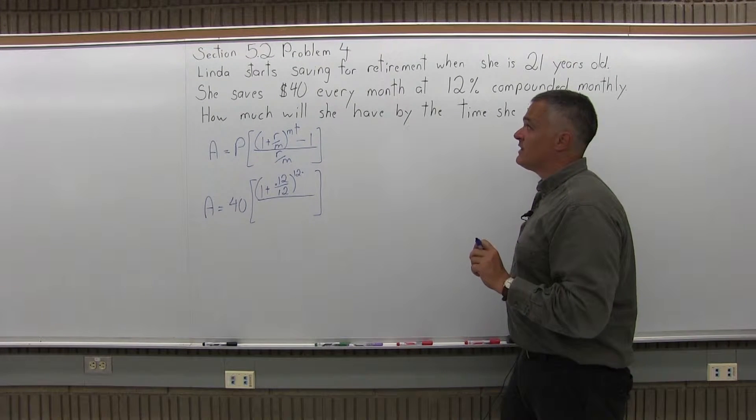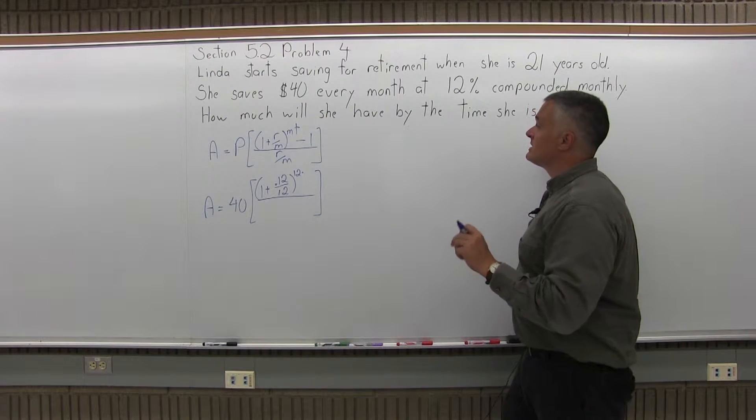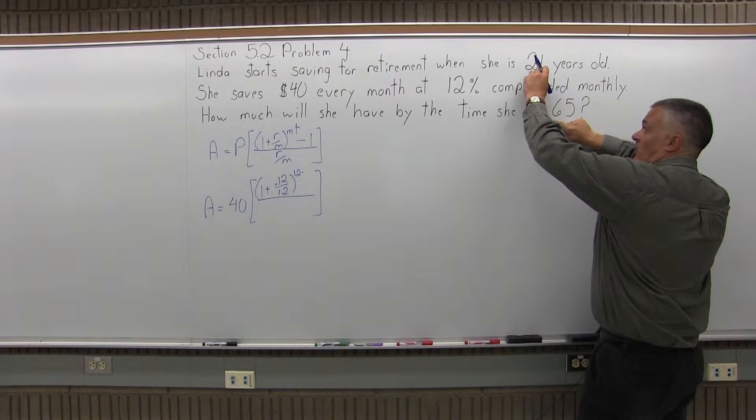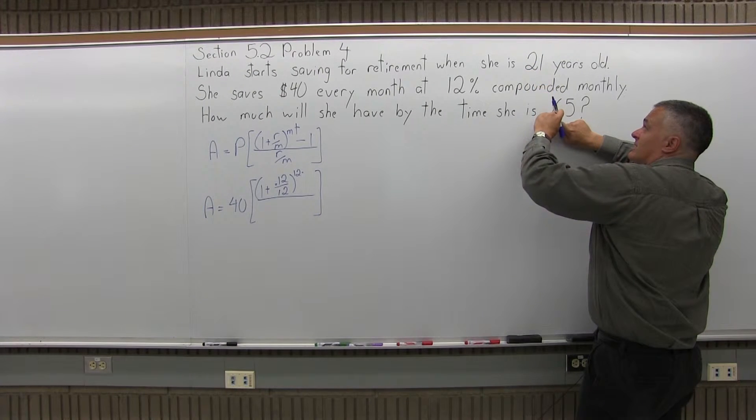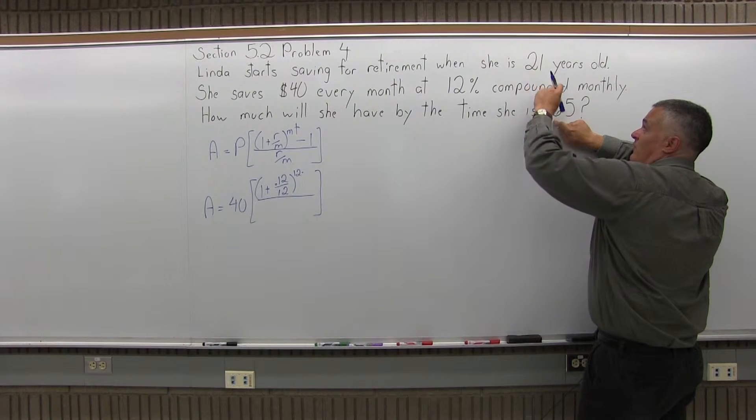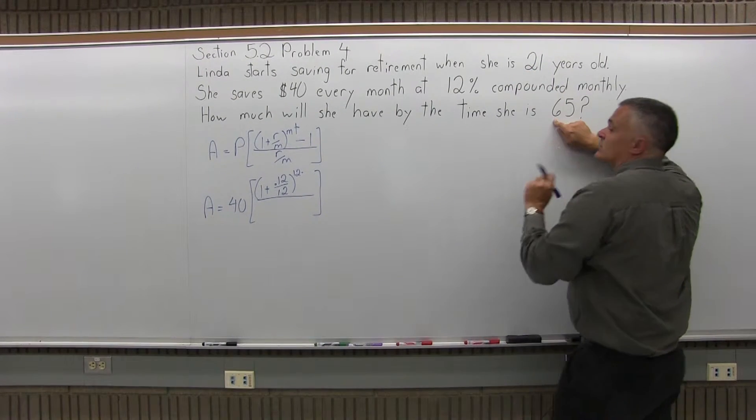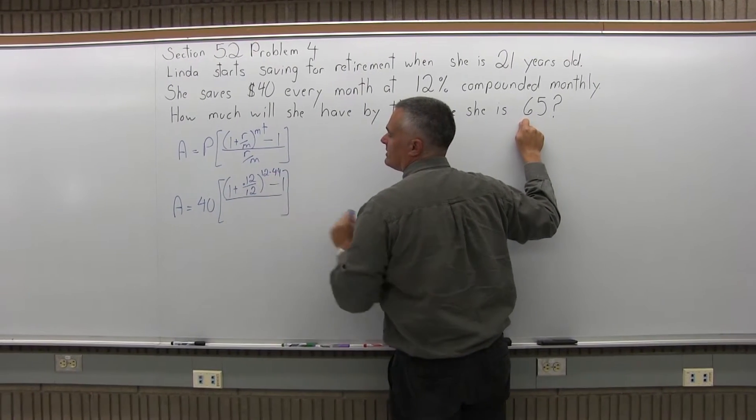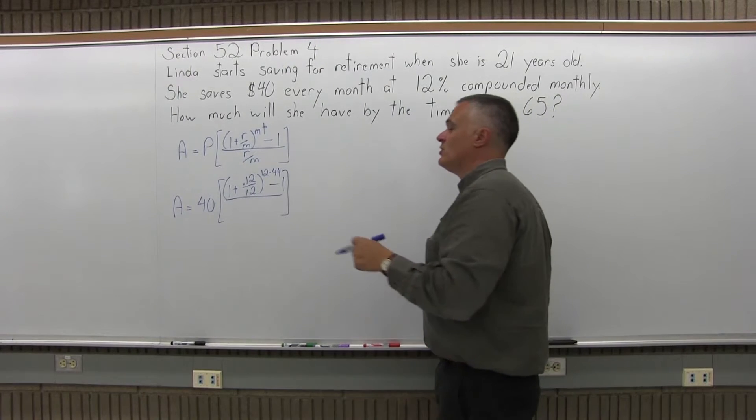But she doesn't start at age birth, at age 0. She starts at age 21. So 21 years to age 65, there's a span of 44 years. So that's the T. The investment is for 44 years. And there's a minus 1 at the end of the numerator and the brackets.